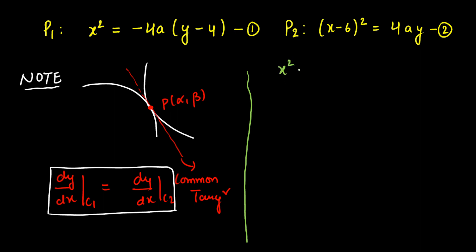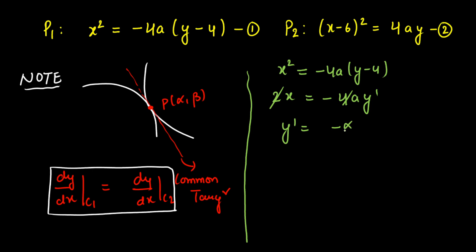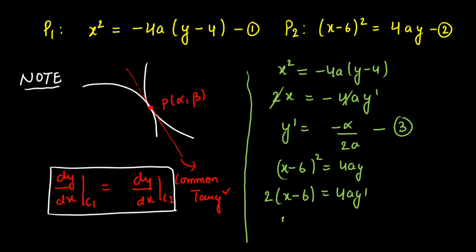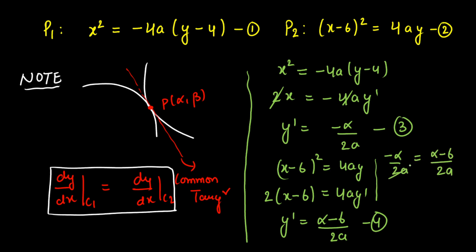Differentiating P1: x² = -4a(y - 4) gives 2x = -4a·y', so y' = -x/(2a). At the contact point (α, β), this gives y' = -α/(2a). Differentiating P2: (x-6)² = 4ay gives 2(x-6) = 4a·y', so y' = (x-6)/(2a). At (α, β), y' = (α-6)/(2a). Equating the two derivatives: -α/(2a) = (α-6)/(2a). The 2a cancels, giving -α = α - 6, so 2α = 6, therefore α = 3.